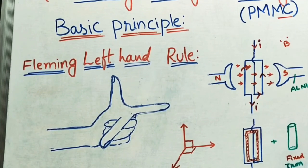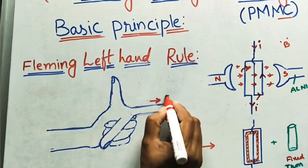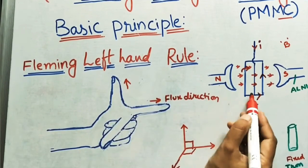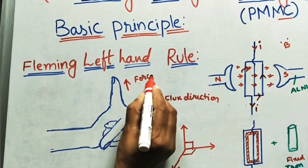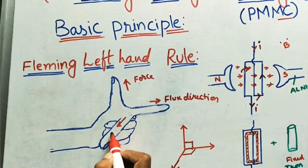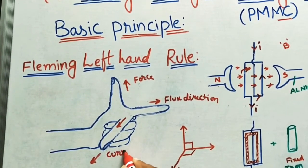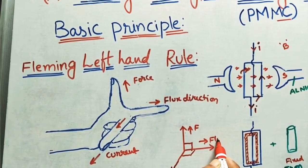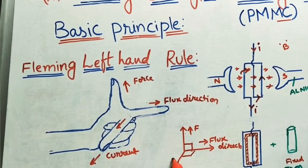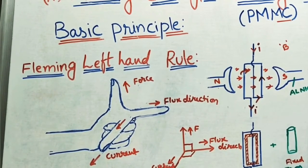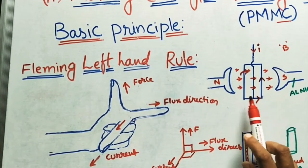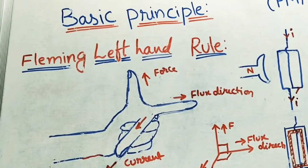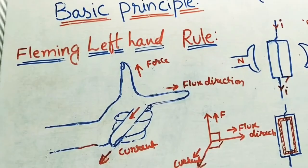This finger shows the flux direction, also called the magnetic field. This finger shows the force on the coil, or the rotating force. And this finger shows the current direction. So in summary: flux direction, force direction, and current direction — this is Fleming's Left Hand Rule, which we apply as the basic principle in the case of motors and the making of voltmeters, ammeters, and galvanometers.